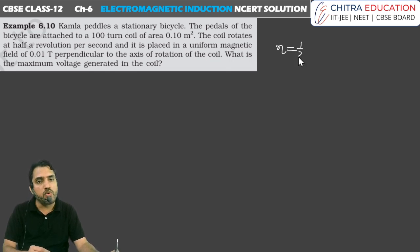So 1 by 2 RPS is the number of revolutions per second. The coil rotates at half revolution per second. It is placed in a uniform magnetic field of 0.01 Tesla perpendicular to the axis of rotation of the coil. What is the maximum voltage generated in the coil? So here we have a question of AC generator.